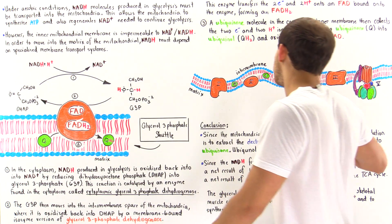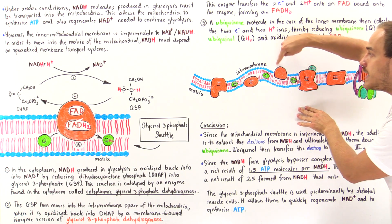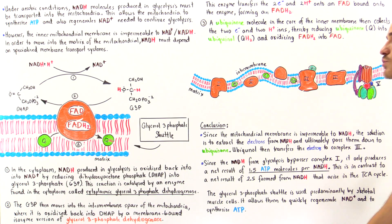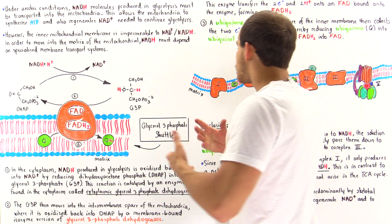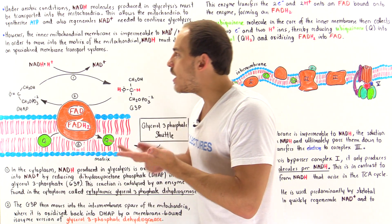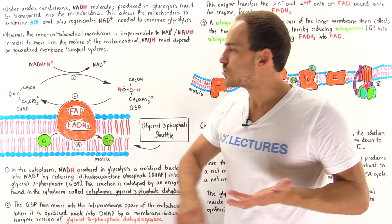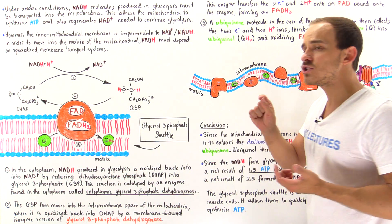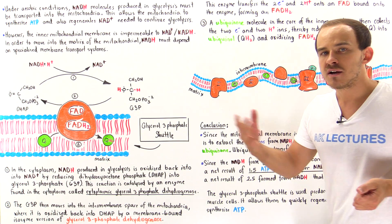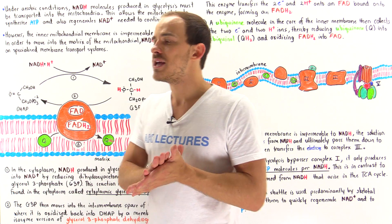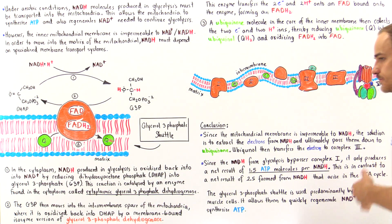Because the electrons bypass Complex I, the net number of ATP molecules produced by the NADH formed in glycolysis is only 1.5, compared to a value of 2.5 produced by NADH molecules formed in the citric acid cycle.